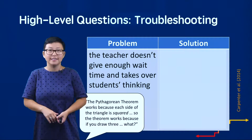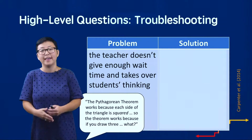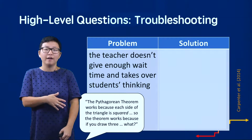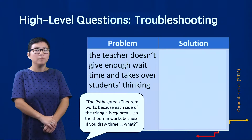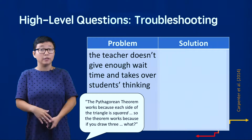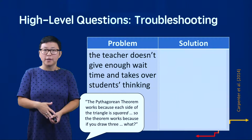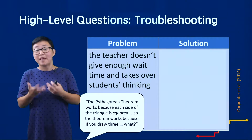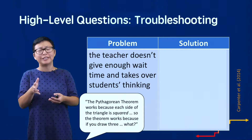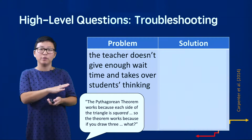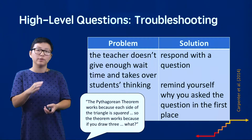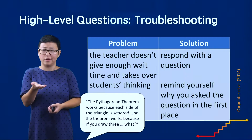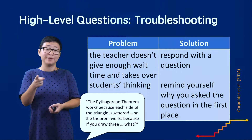Another challenge that teachers might face is that they don't give enough wait time and, in an attempt to help a student, they take over the student's thinking. For example, a teacher might say to a student, the Pythagorean theorem works because each side of the triangle is squared — so the theorem works because if you draw three... what shape do you draw here? They might have good intentions to help students, but instead we would encourage you to respond with a question and ask students — remember, to uncover their thinking.